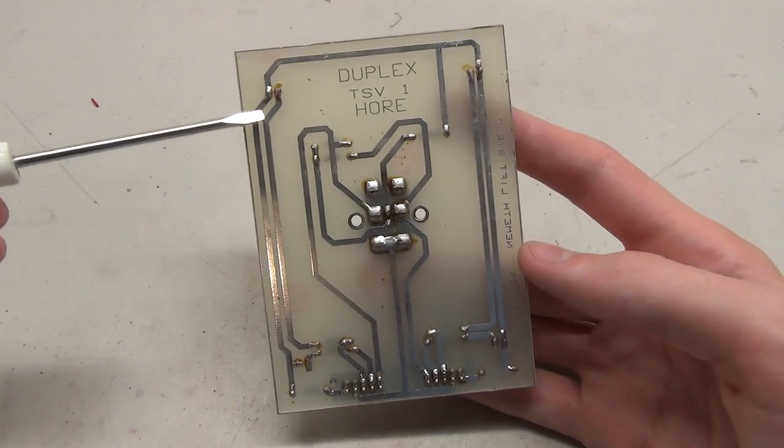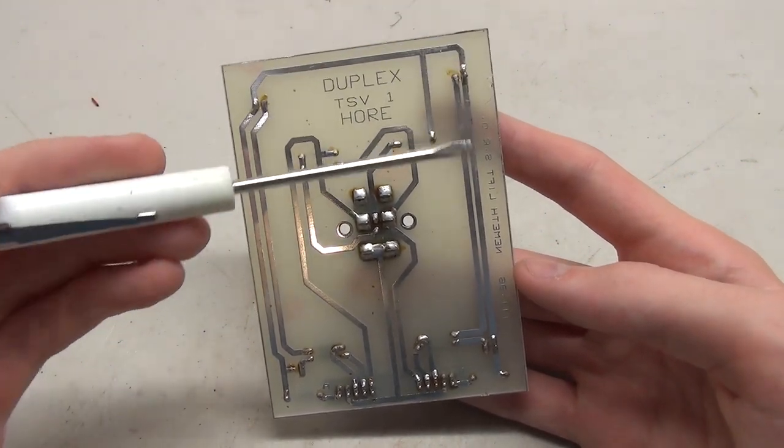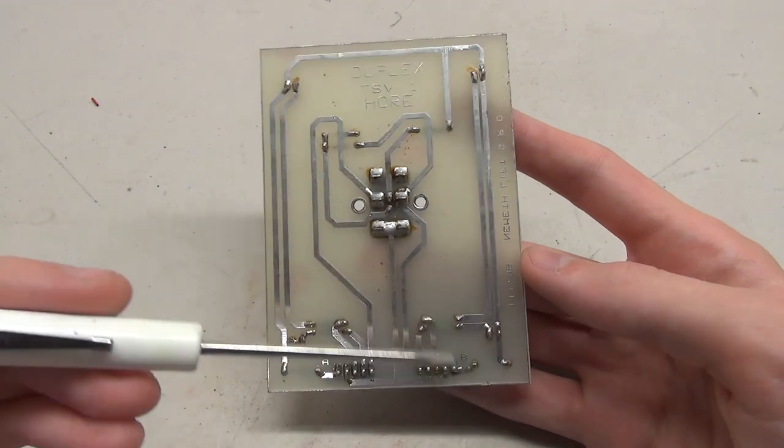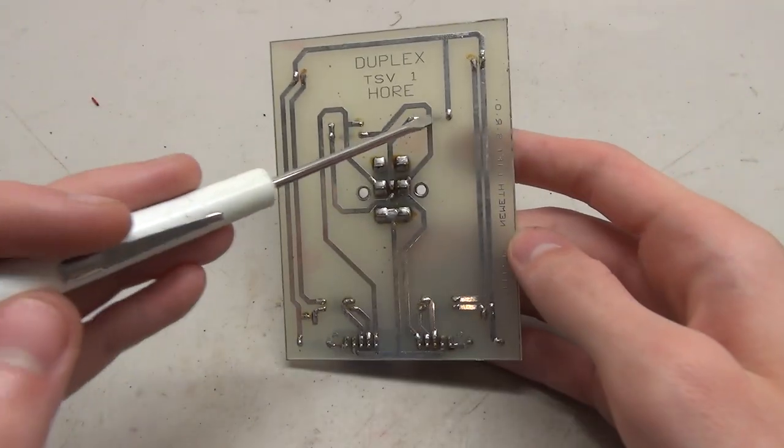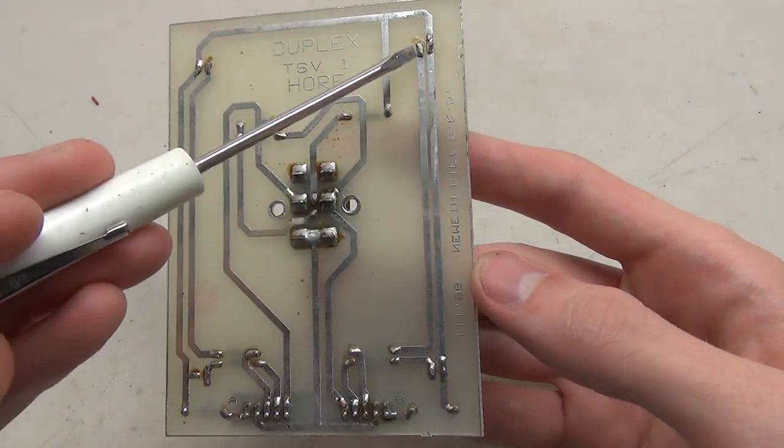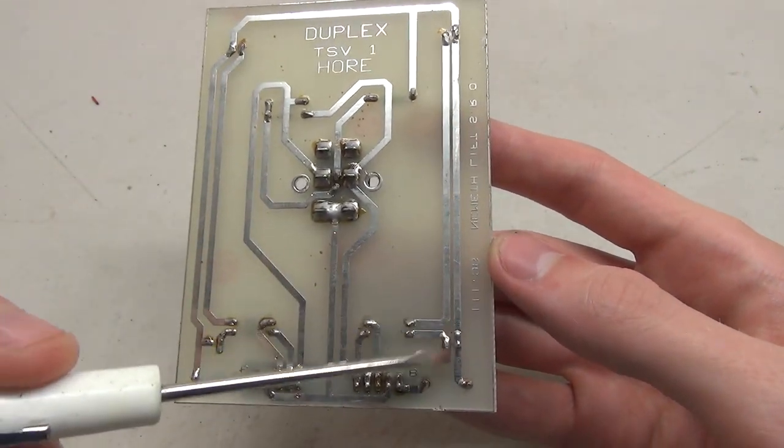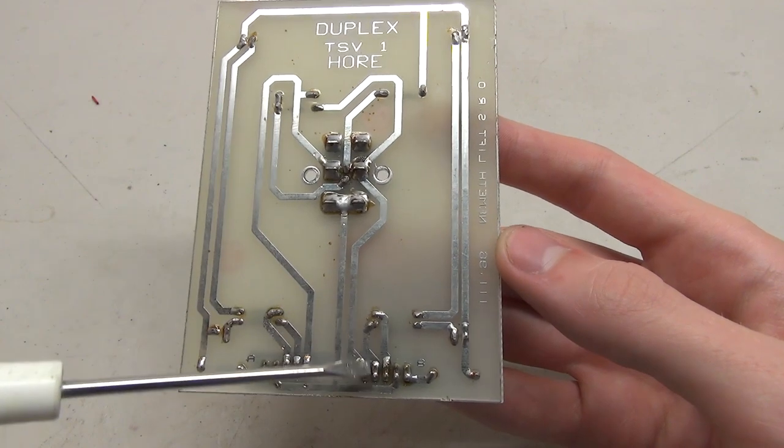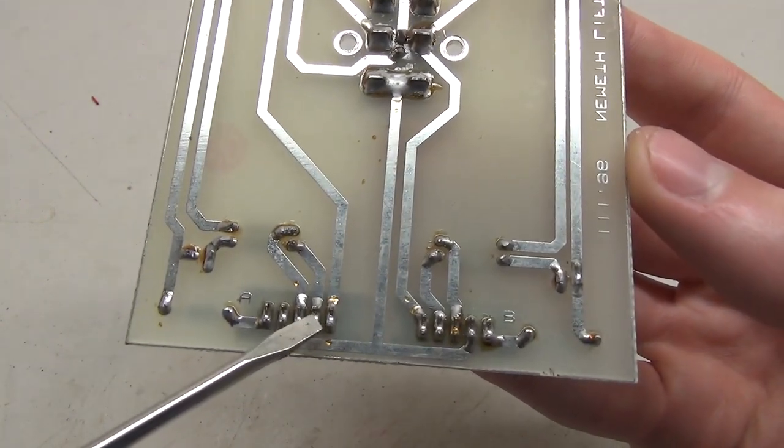And then that's connected by this strip here which connects all of the LEDs to a common connector. We've got a resistor here for this one which brings it down to the middle. And then on each LED there's another pin which goes here.